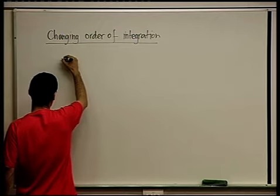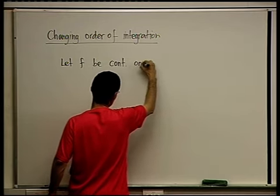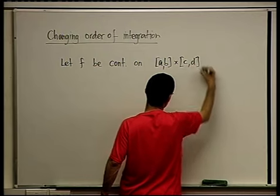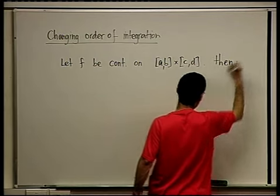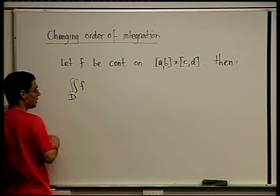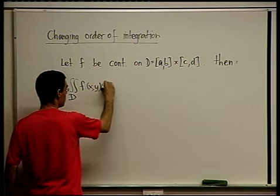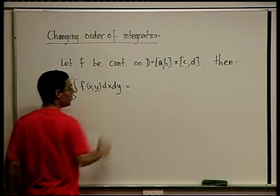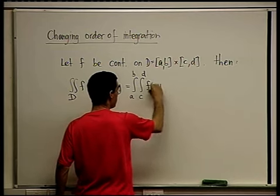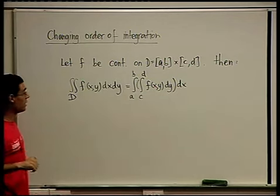The theorem says the following: let f be continuous on a rectangle, say [a,b] × [c,d]. Then the double integral of f over domain D equals the integral from a to b of the integral from c to d of f(x,y) dy dx. That was the theorem — the baby version of iterated integrals on a rectangle.